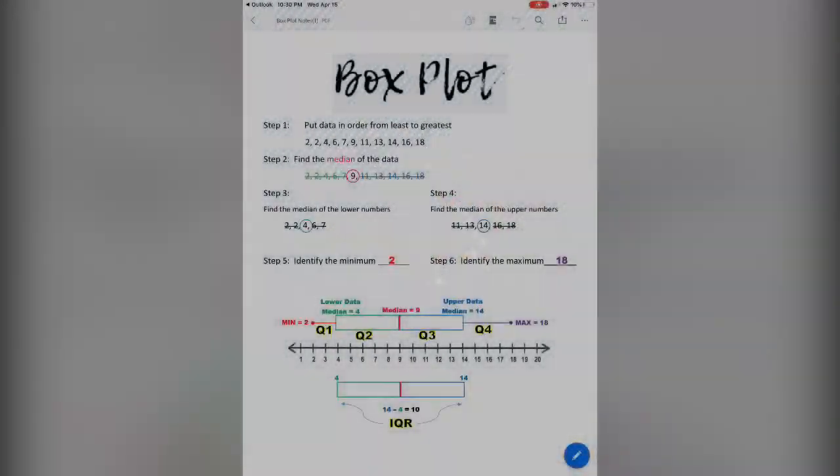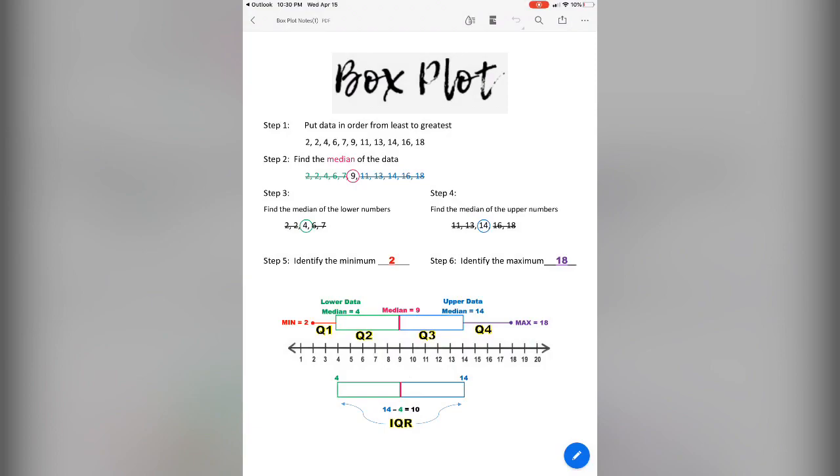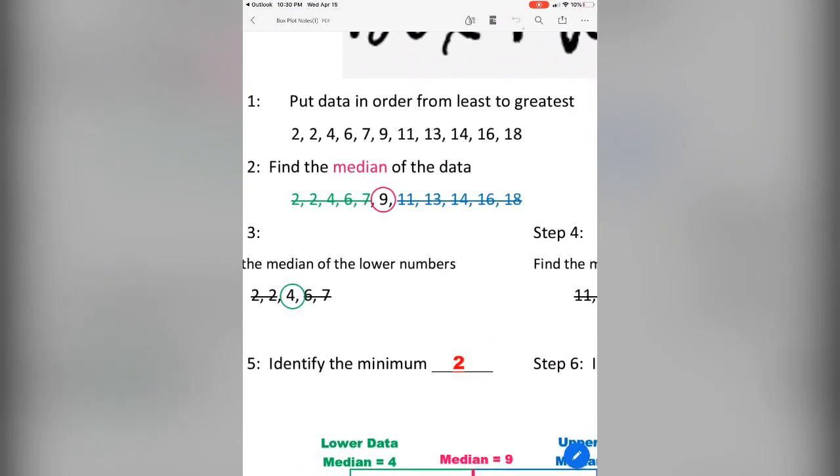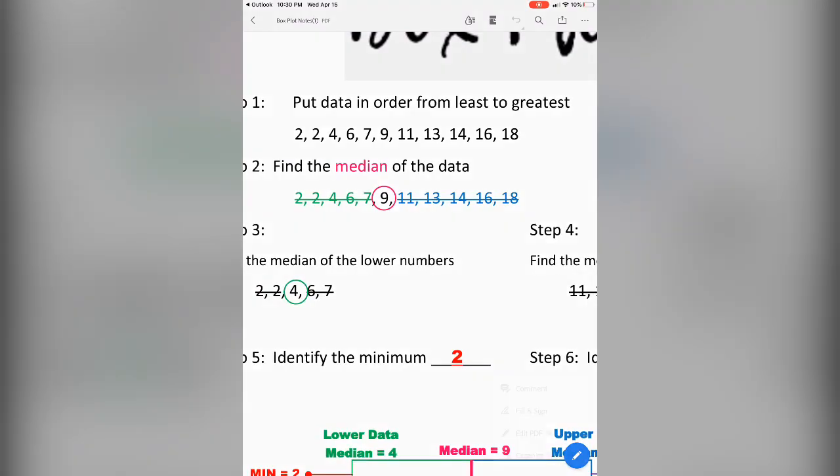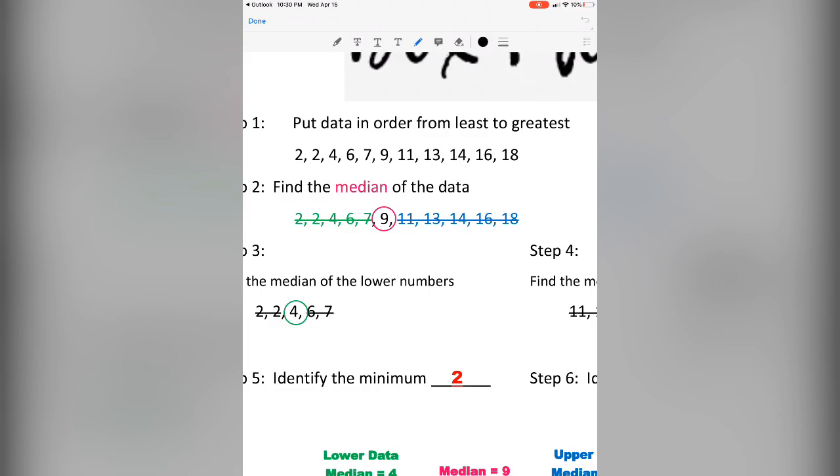When you think about a box plot, you should know that it is a graph located on a number line. There's a box in the middle and two lines that come out that kind of look like whiskers. Since the graph is on the number line, the first thing we need to do is make sure our data is in order from least to greatest.